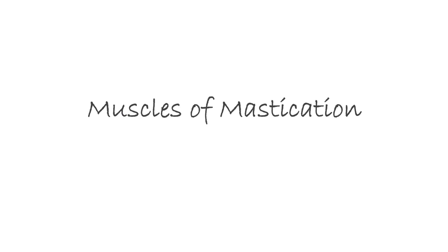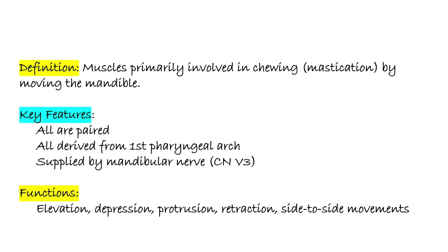Today's topic is Muscles of Mastication. These are the muscles involved in chewing. They move the mandible to help with eating and speaking. These muscles help in movements like elevation, depression, protrusion, retraction, and side-by-side movement of the jaw. All of them are paired and originated from the first pharyngeal arch. They are supplied by the mandibular nerve, a branch of the trigeminal nerve.